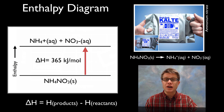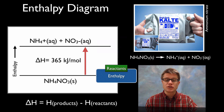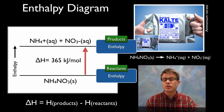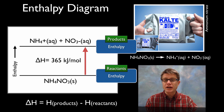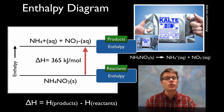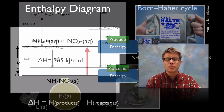It's a positive value, or an uphill reaction, because our products have a greater enthalpy than our reactants. We don't have to know what that energy is to begin or at the end — we just have to know what that change is in order to measure enthalpy.